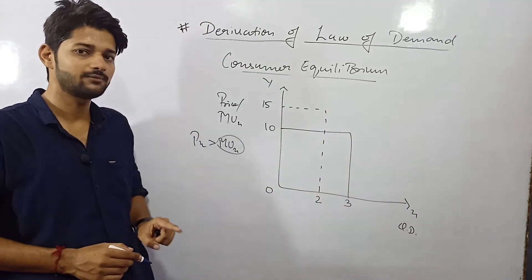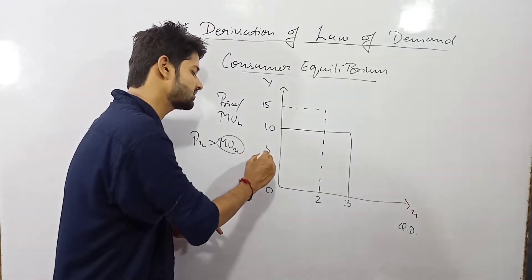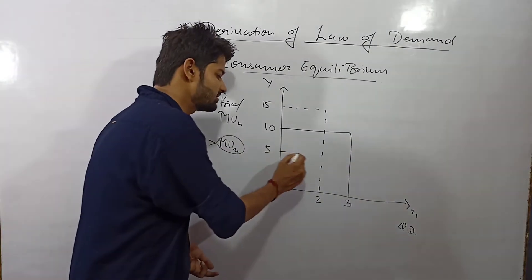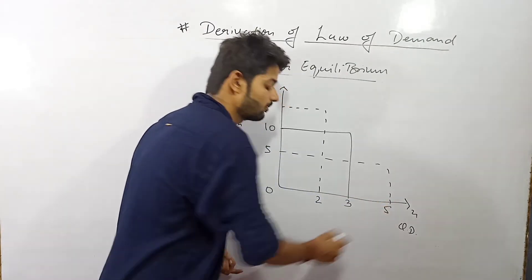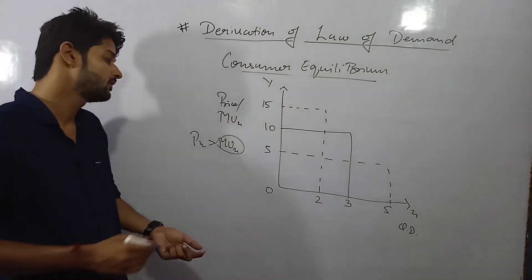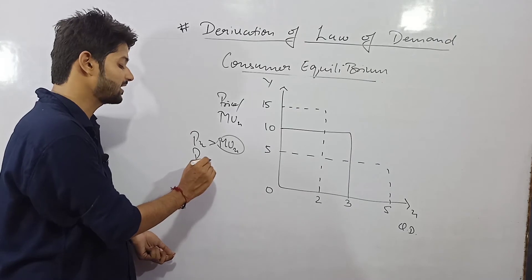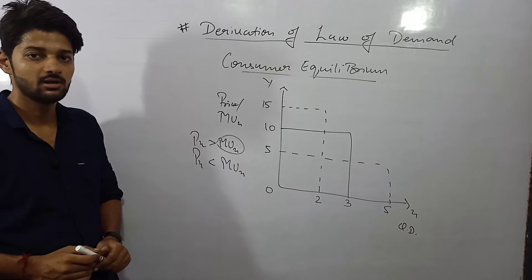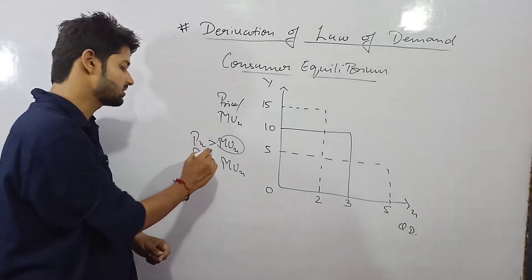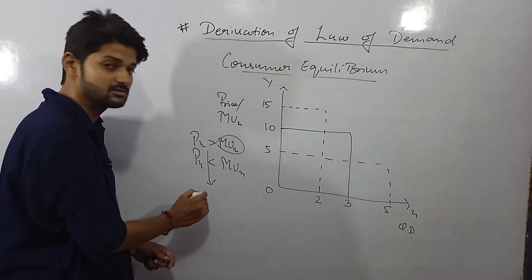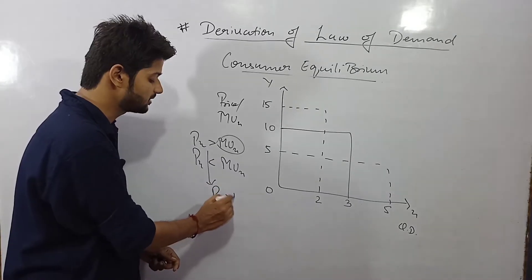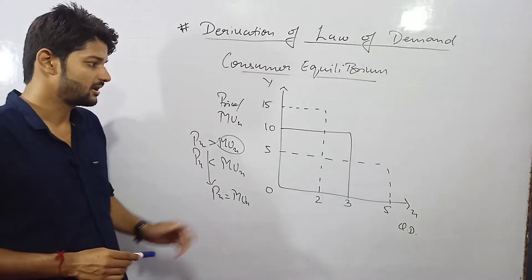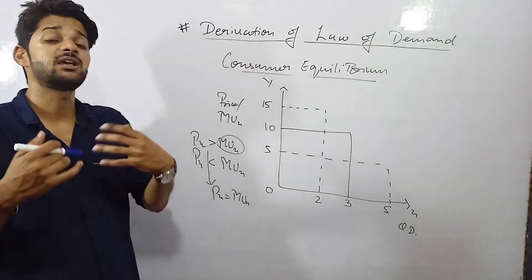Now the vice versa situation is, suppose the commodity price is Rs.5, so as the price decreases he is having the tendency of consuming more commodity that is 5. Now it also tells that if the price has been decreased the marginal utility from the X is also increased but in between those 2 conditions there is a 3rd condition which I am writing here that if the price of the commodity is just equal to the marginal utility received from that commodity this is the scenario where a consumer is in equilibrium.